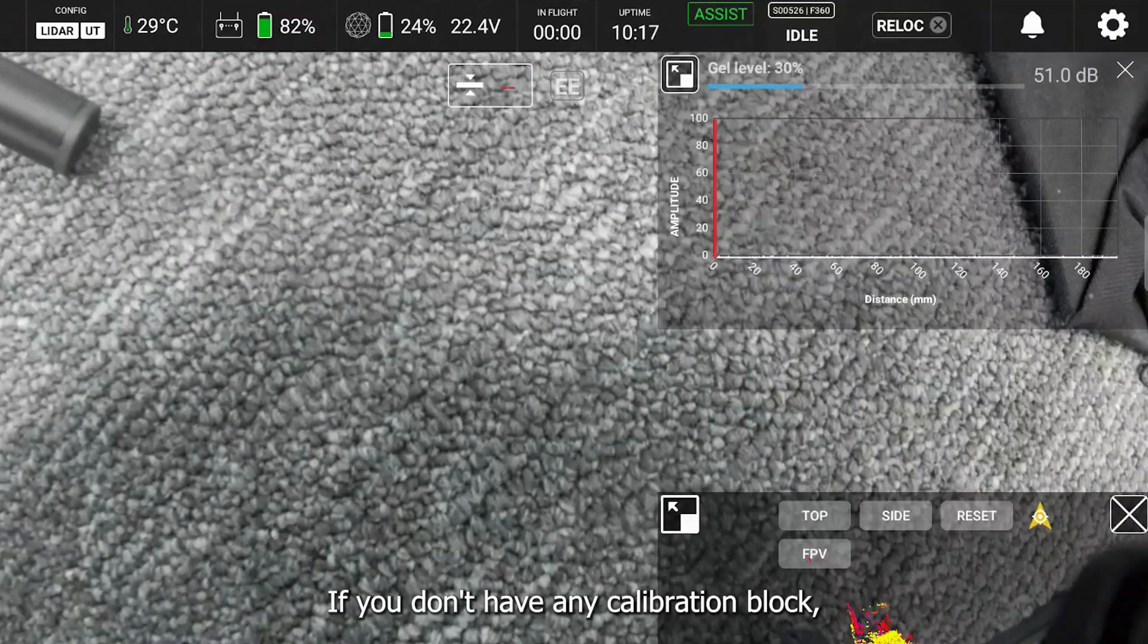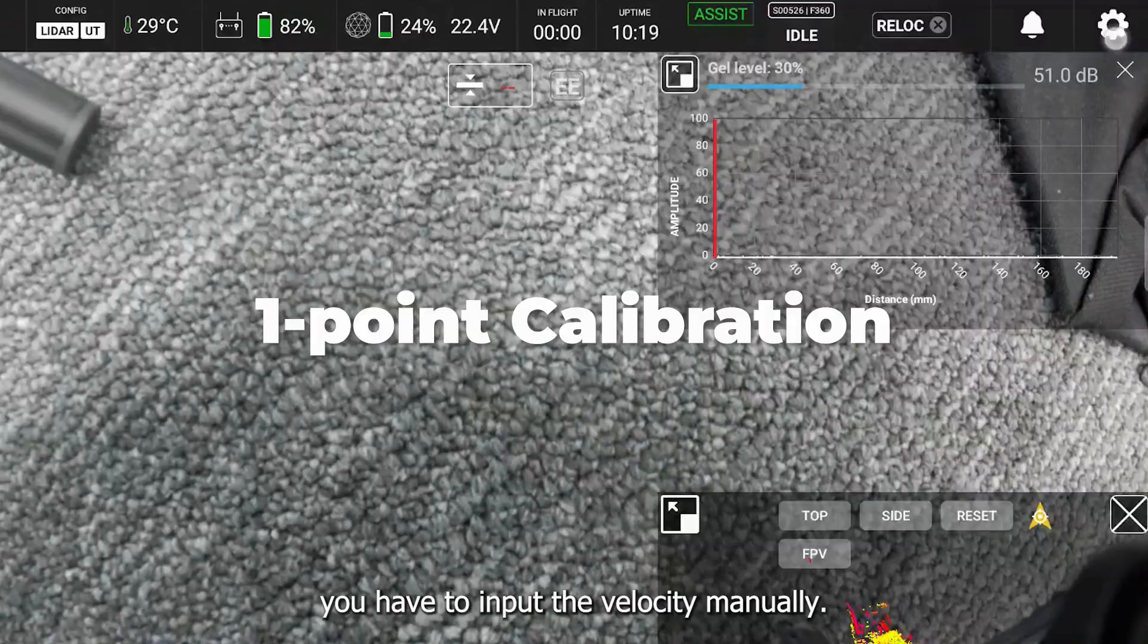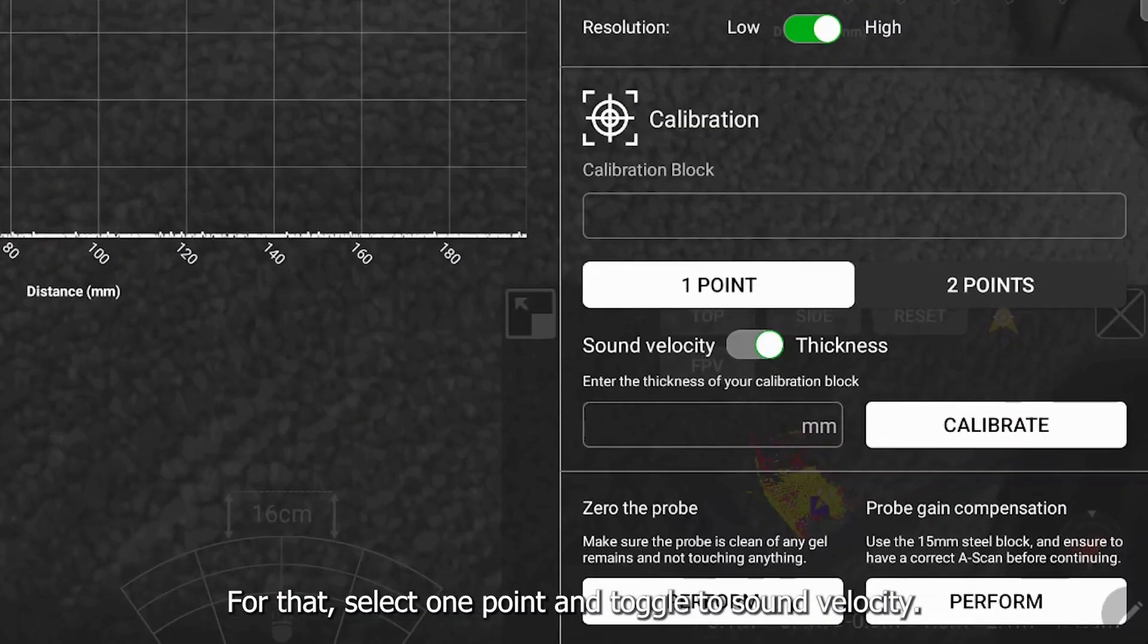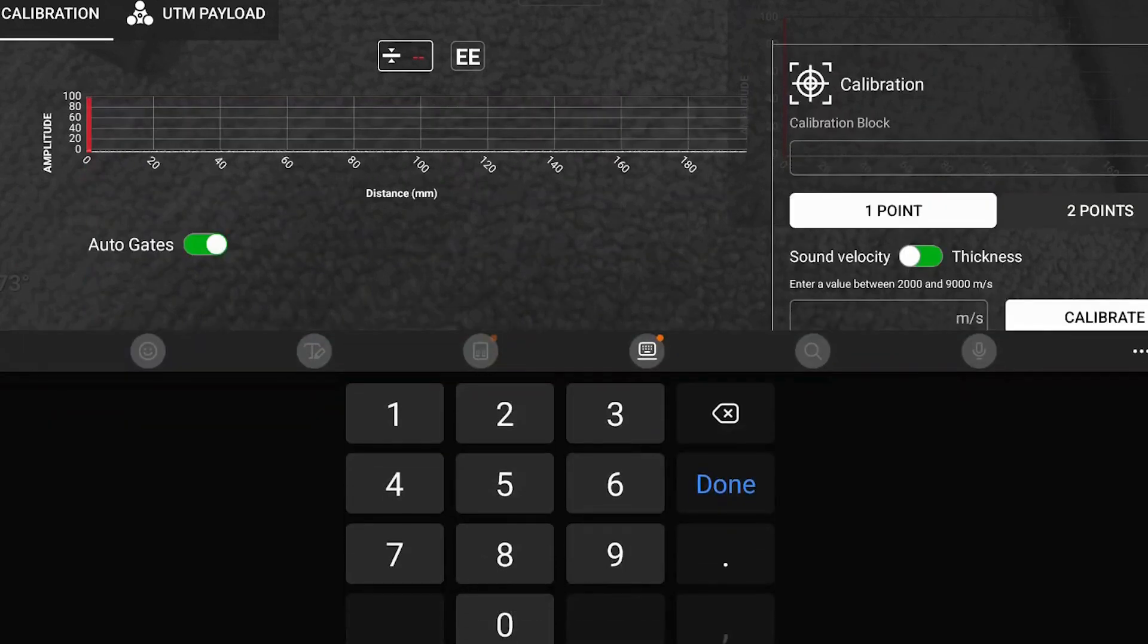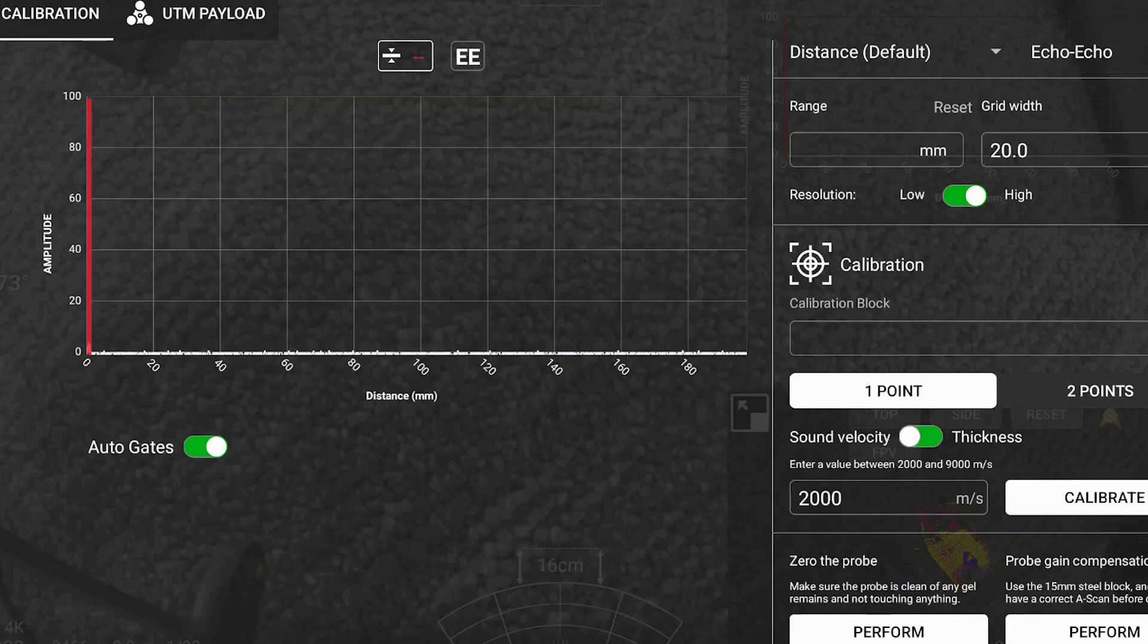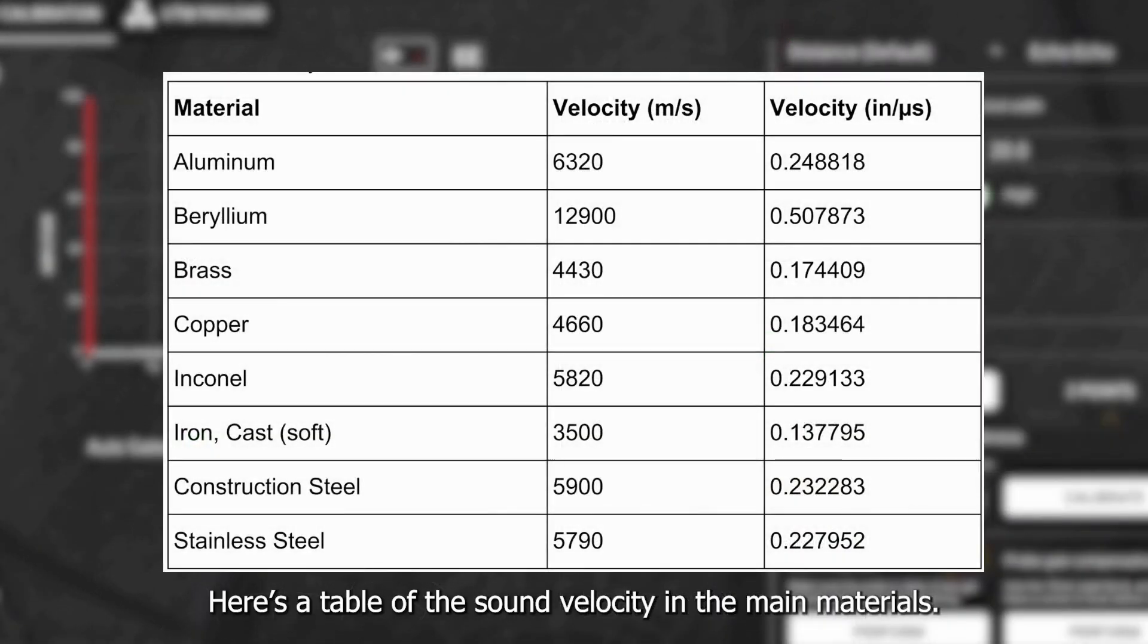If you don't have any calibration block, you have to input the velocity manually. For that, select one point and toggle to sound velocity, enter the value and press calibrate. Here's a table of the sound velocity in the main materials.